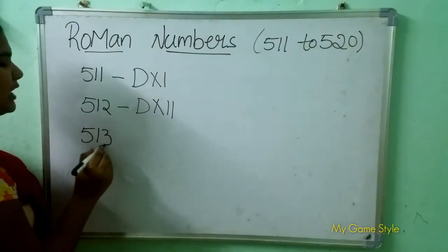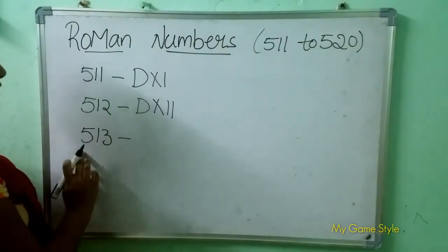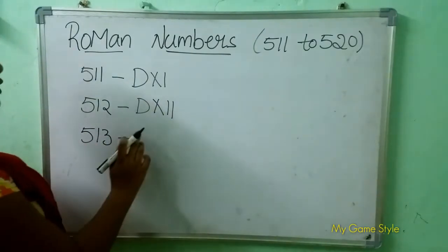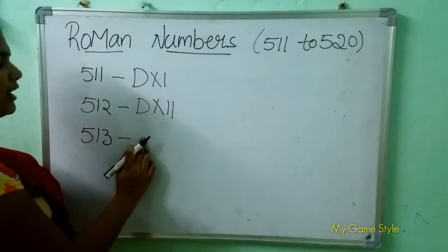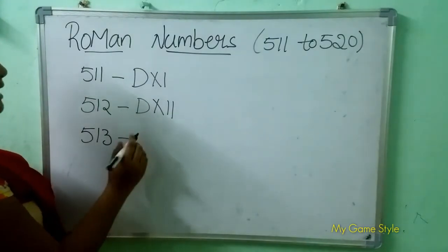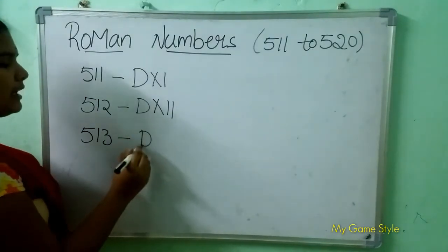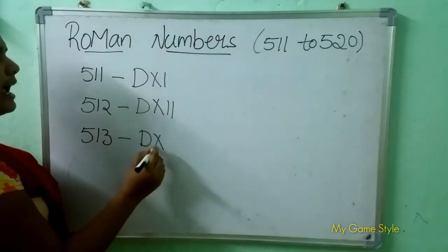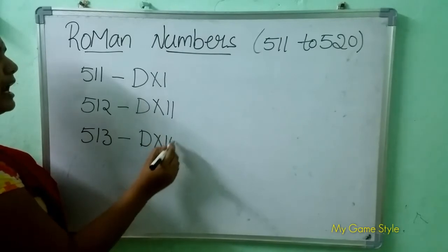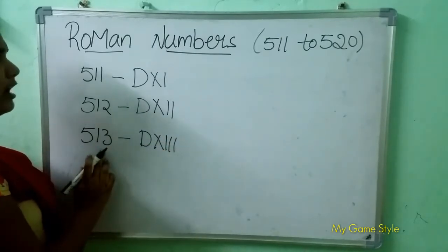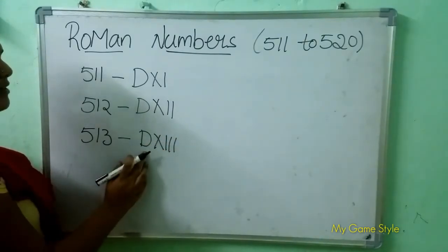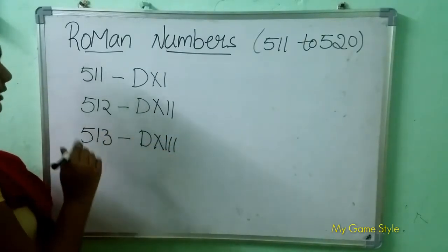513 means 513. So how to write 513 in Roman numbers? D is 500. XIII is 13. So this means 513.